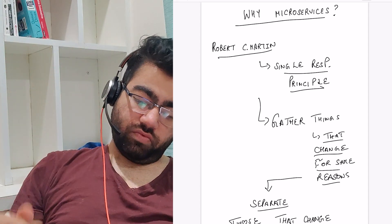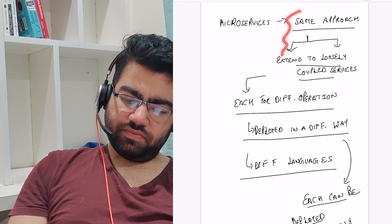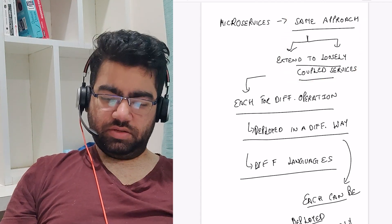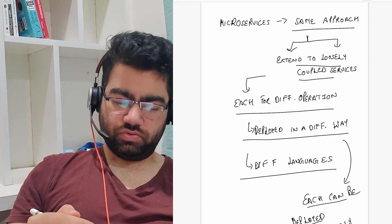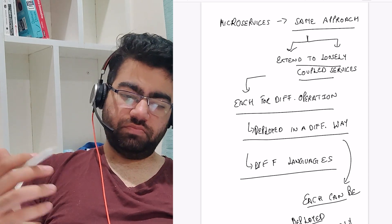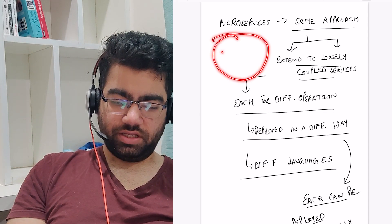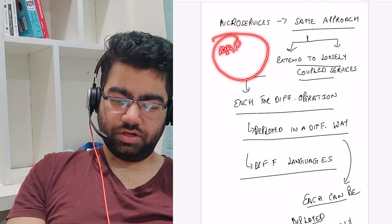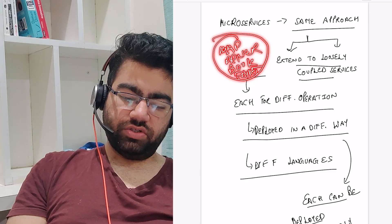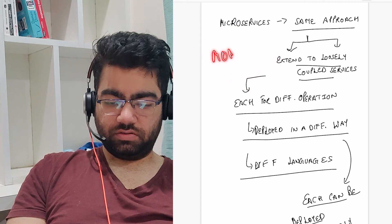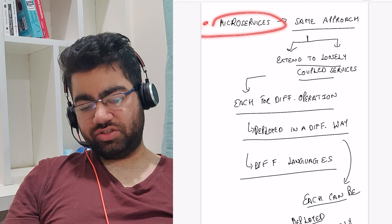Microservices are based on this principle only. It simply means extending to loosely coupled services — we have each service for a different operation. The opposite of microservices is a monolithic service. For example, with Uber, you have just one single big service that contains everything: the map, driver information, booking, payment — everything is handled in that one single service.